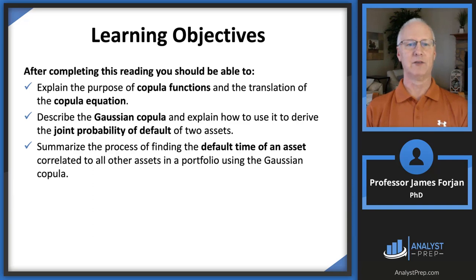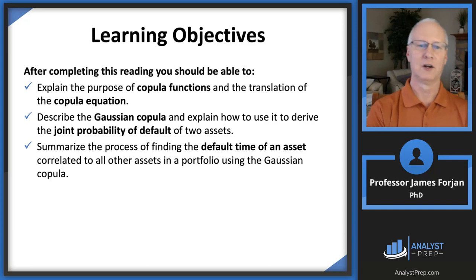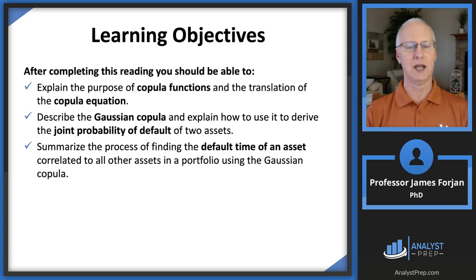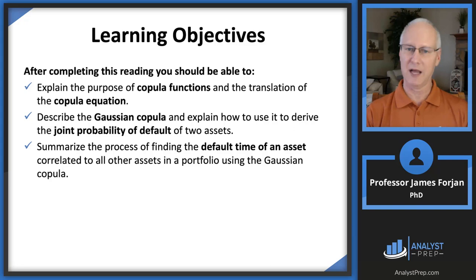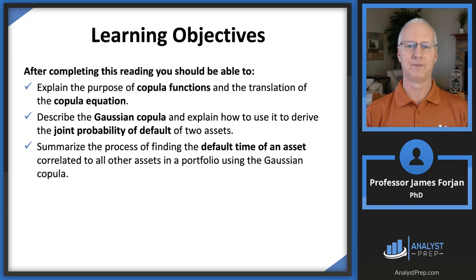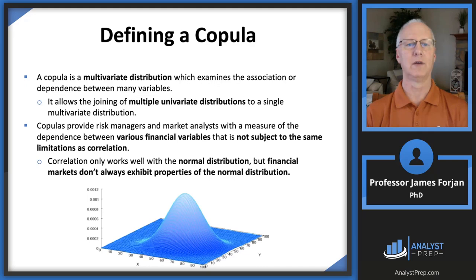The learning objectives here are to explain, describe, and summarize — not compute or calculate. So we'll focus on understanding what's going on and relate it back to the golf and bond examples. We'll work through what's known as a copula function and a translation of the copula equation, focusing on the Gaussian copula — which uses the normal distribution — and then a default probability example. These are the three learning objectives inside this relatively short chapter.